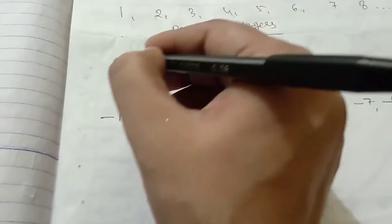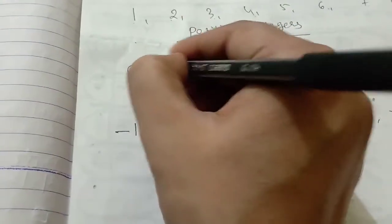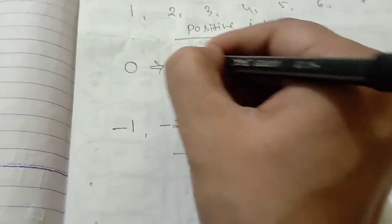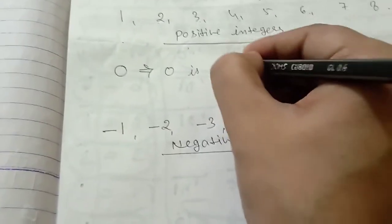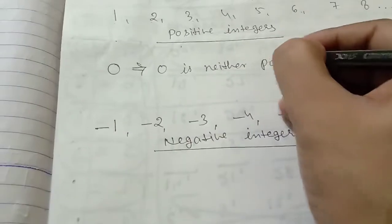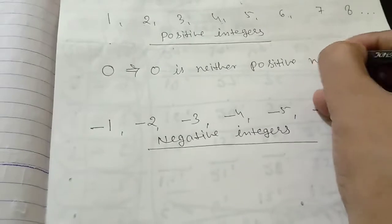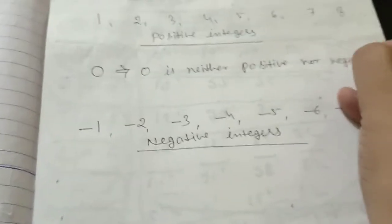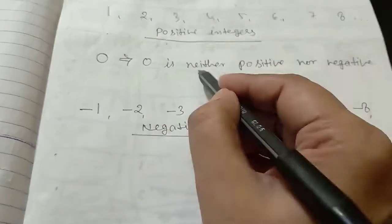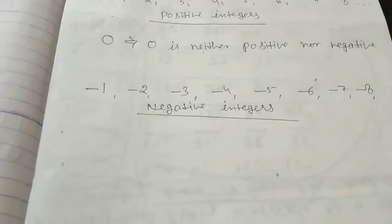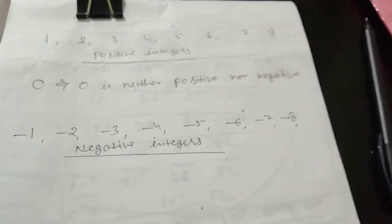Now, coming to this number, this is called 0. Zero is neither positive nor negative. Again, I will tell you the whole thing. What are integers?